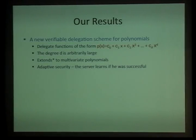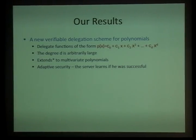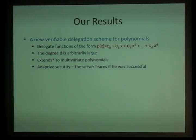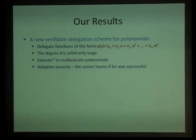The results are the following. The main result is a new delegation scheme for polynomials — specifically, delegating a single-variable polynomial P(x) which can have very high degree D. The coefficients of the polynomial are the data being outsourced. Extending this to multivariate polynomials seems hard and we were not fully successful, though we have some solutions. Interestingly, our construction does have adaptive security, which allows the server to learn whether it was successful in cheating.